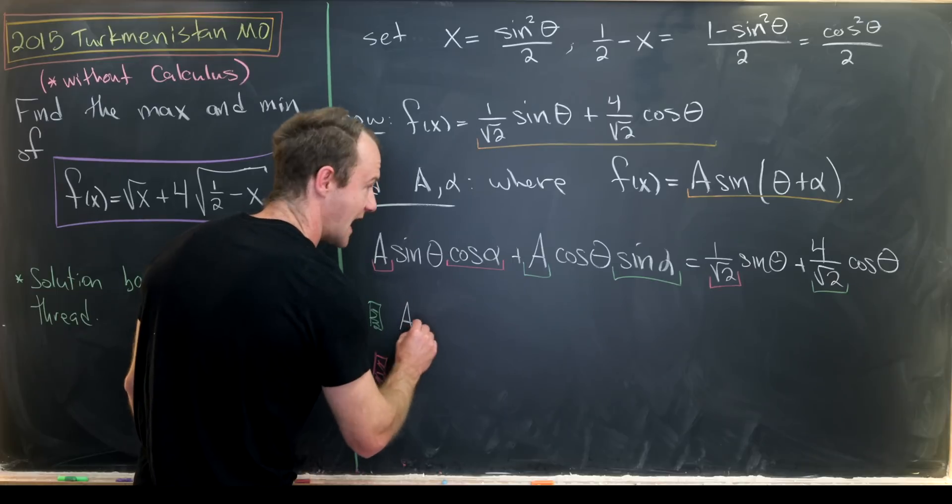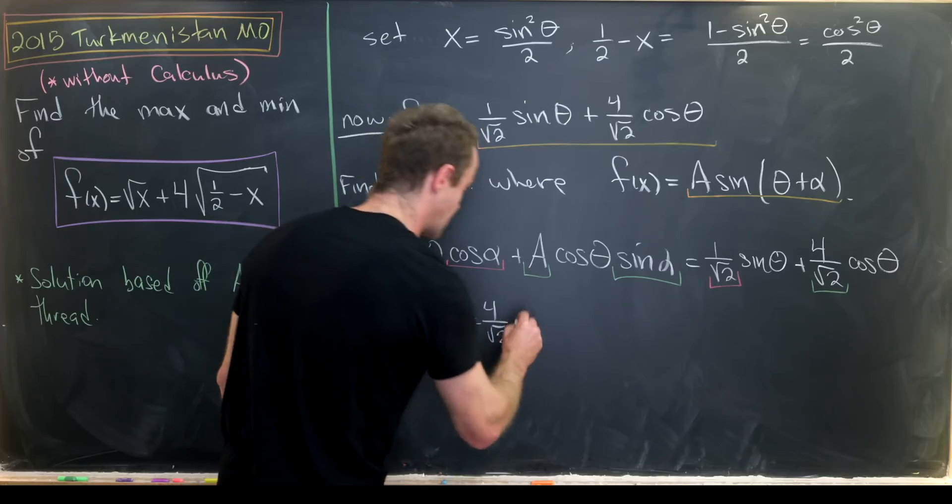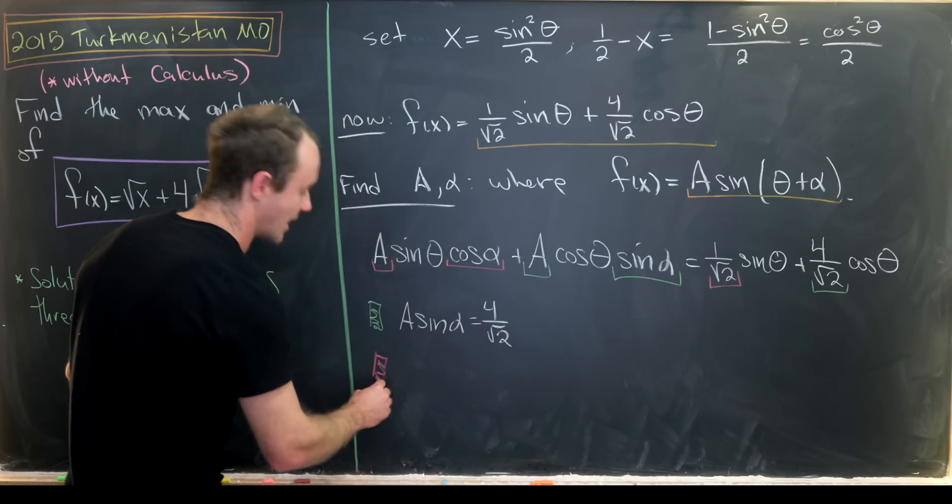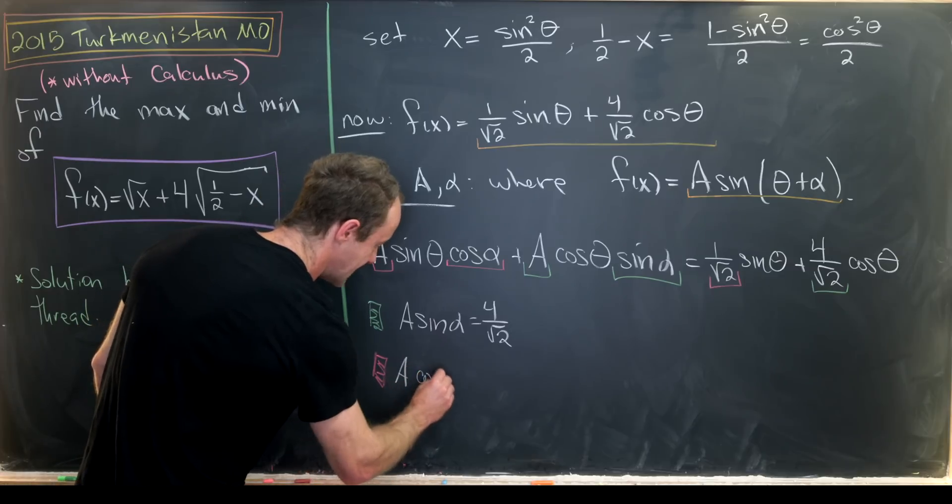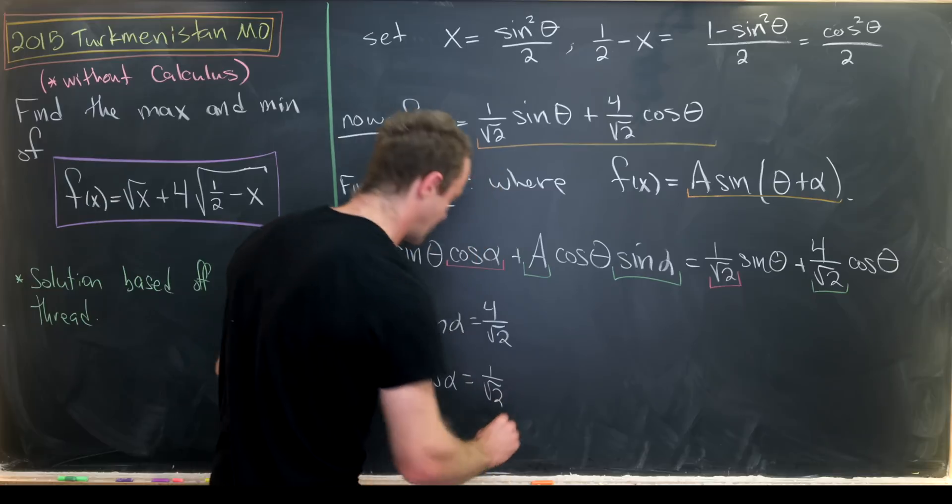So notice the green underlined equation is a times the sine of alpha is equal to four over the square root of two. Whereas the red underlined equation is a times the cosine of alpha is one over the square root of two.